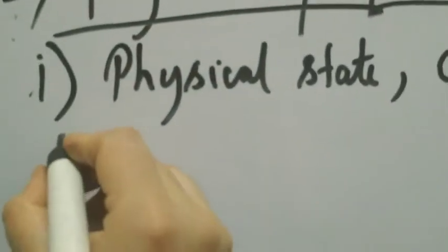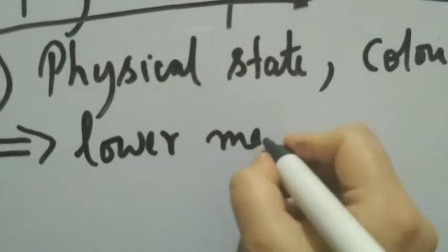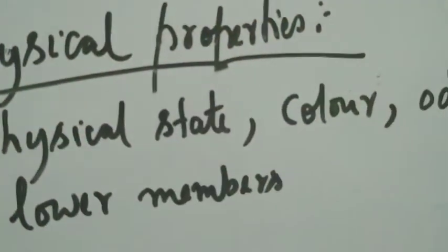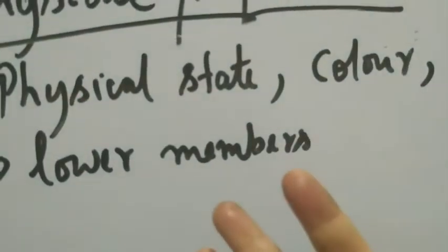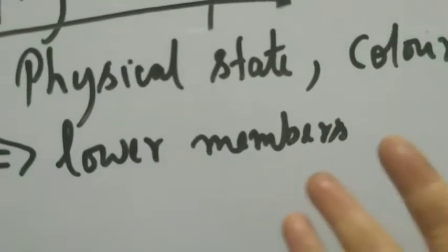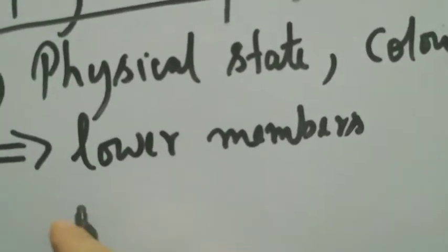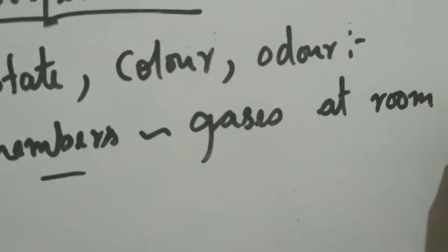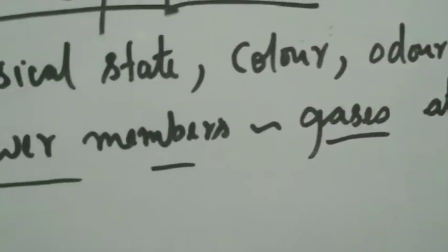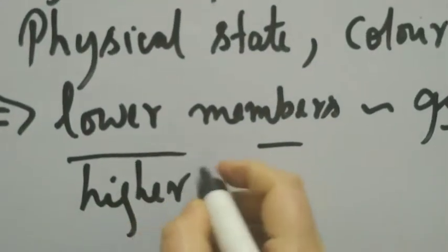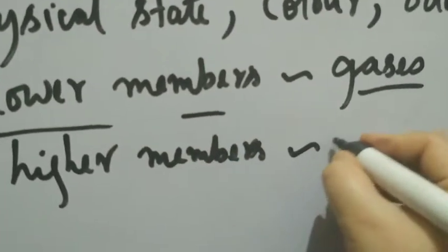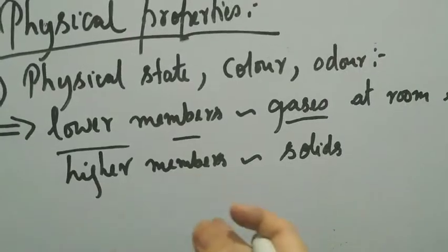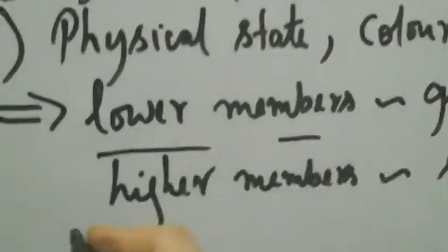Lower members — those with a lesser number of carbon atoms — of haloalkanes and haloarenes, like methyl chloride, methyl bromide, ethyl halides, exist as gases at room temperature. Higher members, which have a higher number of carbon atoms, exist as solids. So depending on the number of carbon atoms, they can be gases or solids.